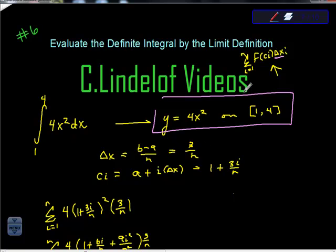To calculate this c sub i, all we have to do is take the initial value plus i times the change in x, and that gives us this. The initial value is 1, i is i, and the change in x was 3 over n, so we get this.